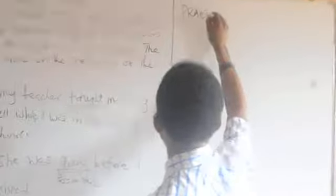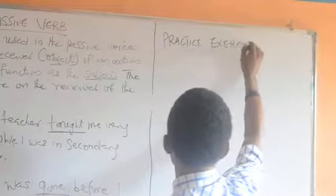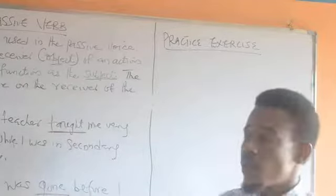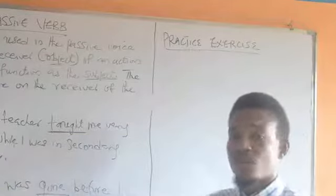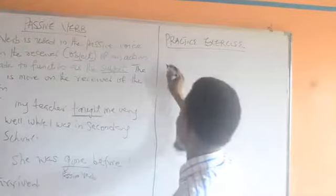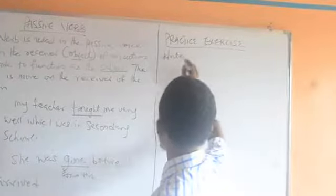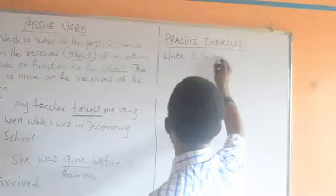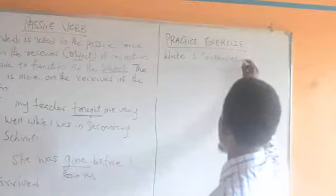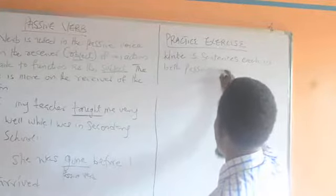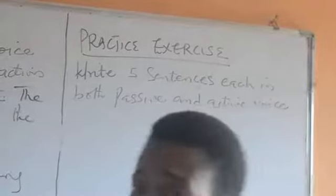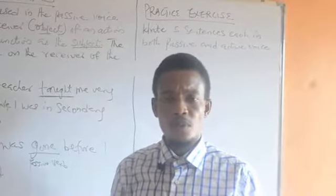Let us take our practice exercise. In English language, there is a difference between speaking English and understanding English. You need to know how to understand English, and in order to do that you need to practice. So in your own time, write out five sentences in both passive and active voice. Thank you very much. In the next few minutes we will continue from where we started. Remember, everyone's best.